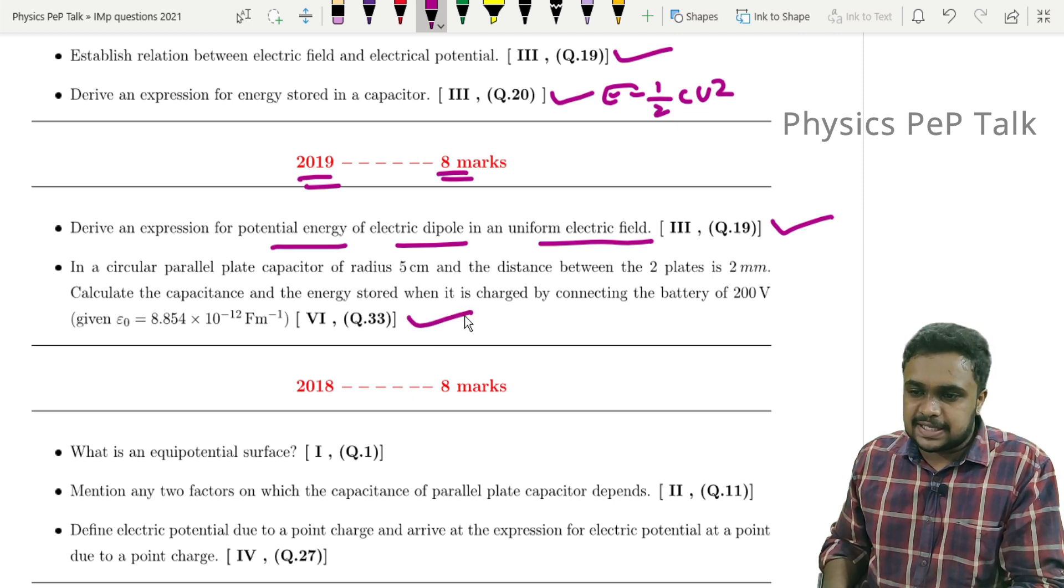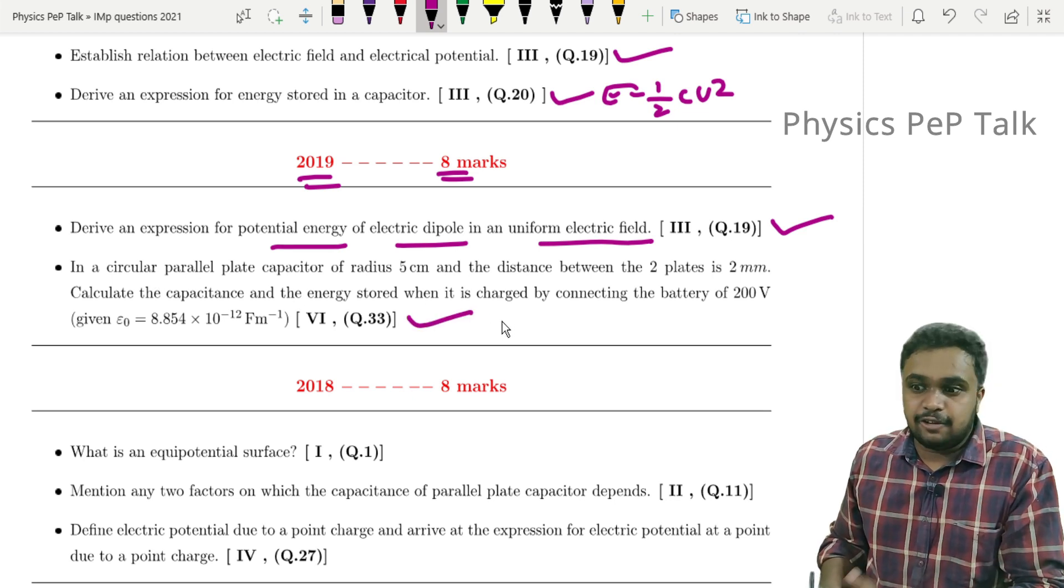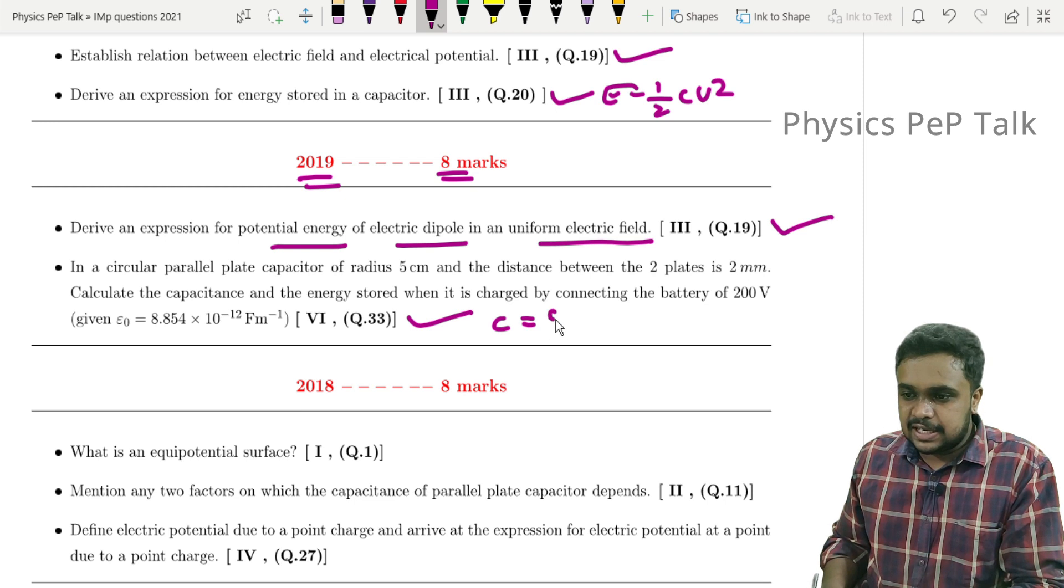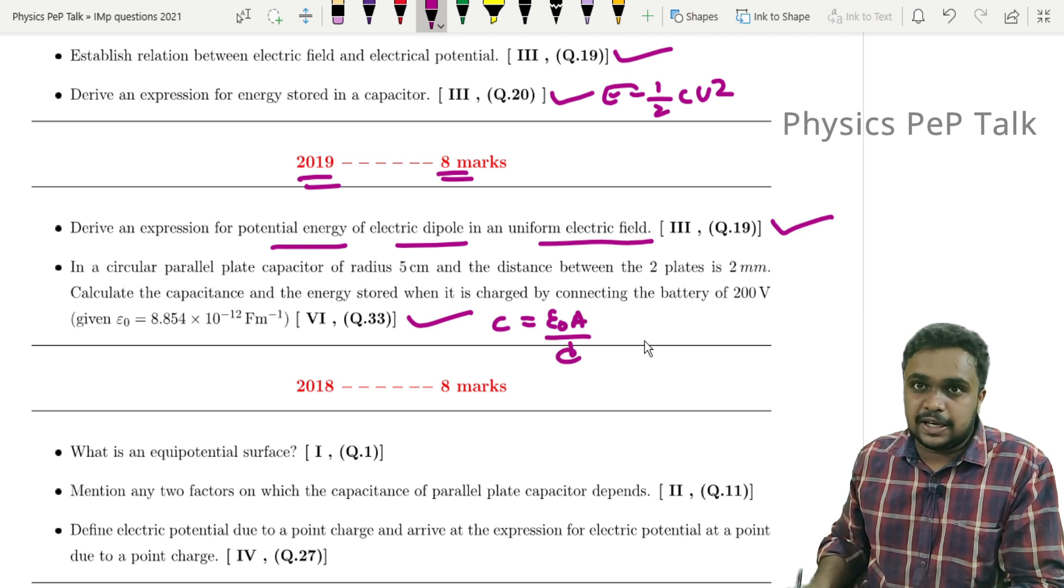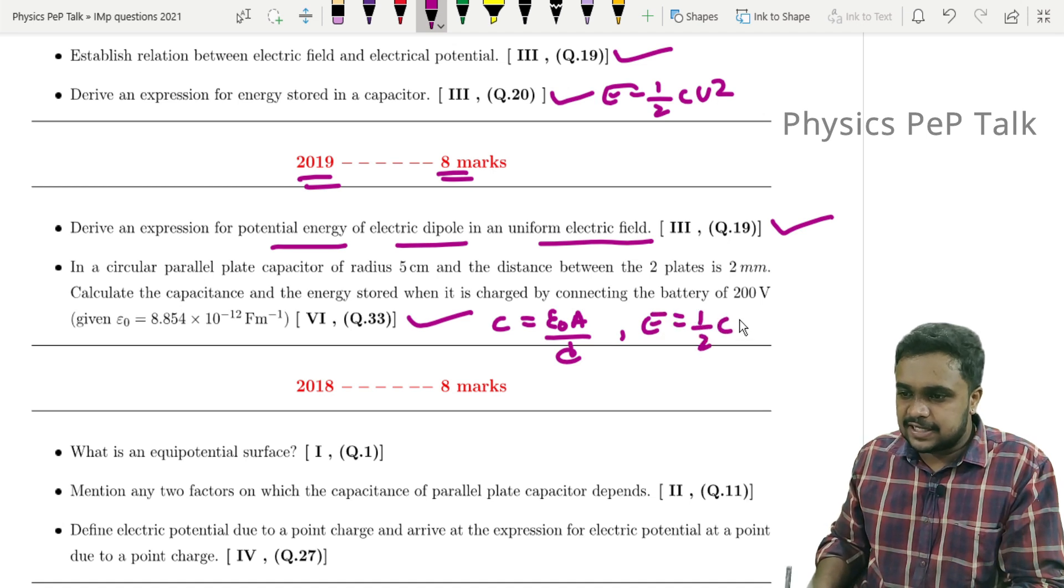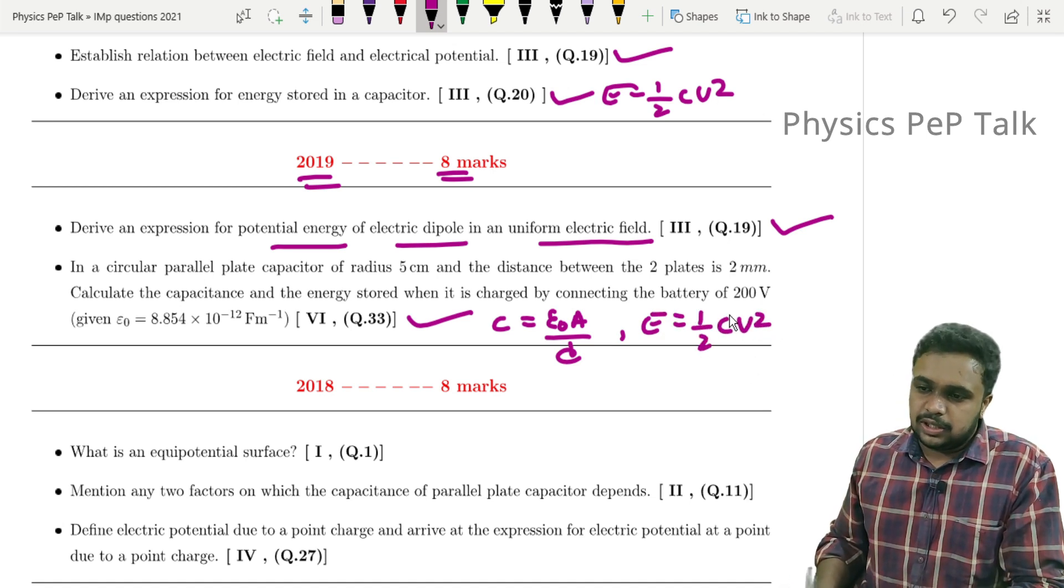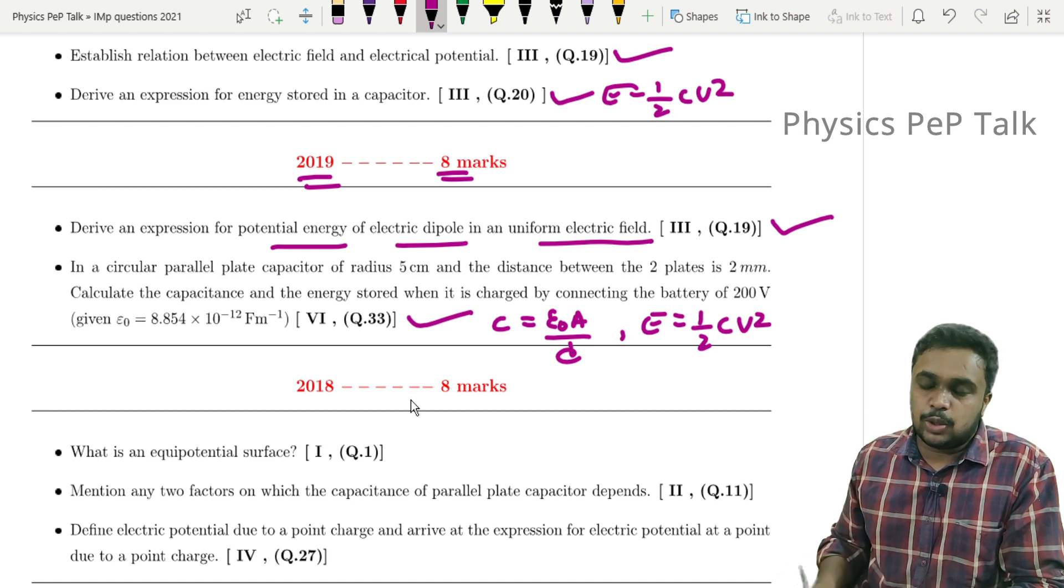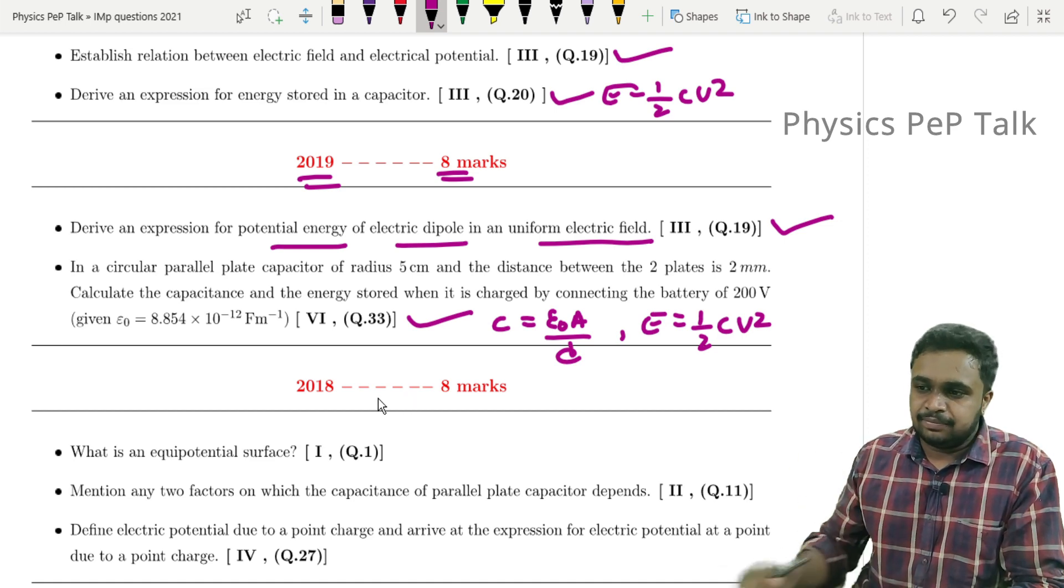So in capacitor which formulas you need to know: C = ε₀A/d, this is for parallel plate capacitor. Next, energy stored in a capacitor, that is 1/2 CV². Use these formulas to solve problems that are usually asked.